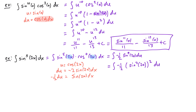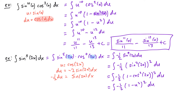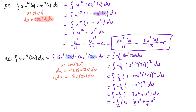Using our trig identity we can replace sine squared of 2x with one minus cosine squared of 2x. So this becomes the integral of negative one half times one minus cosine squared of 2x, squared, du. Now we can replace cosine of 2x with u, giving the integral of negative one half times one minus u squared, squared, du. Multiplying things out this becomes the integral of negative one half times one minus two u squared plus u to the fourth power du. The antiderivative is negative one half times u minus two thirds u cubed plus one fifth u to the fifth power plus c.